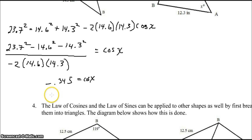This turns out to be negative .345 equals cosine of X, and then that means that X is equal to the inverse cosine of negative .345, which is about 110 degrees.